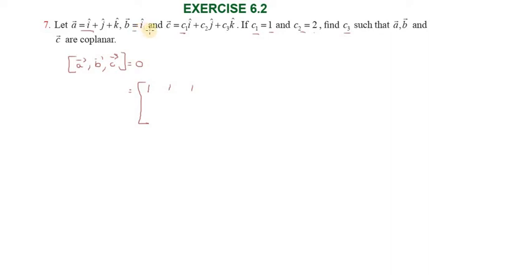So, c1, c2, and c3. C1 is 1, c2 is 2. So 1 i cap plus 2 j cap plus c3. Vector c has components 1, 2, and c3.